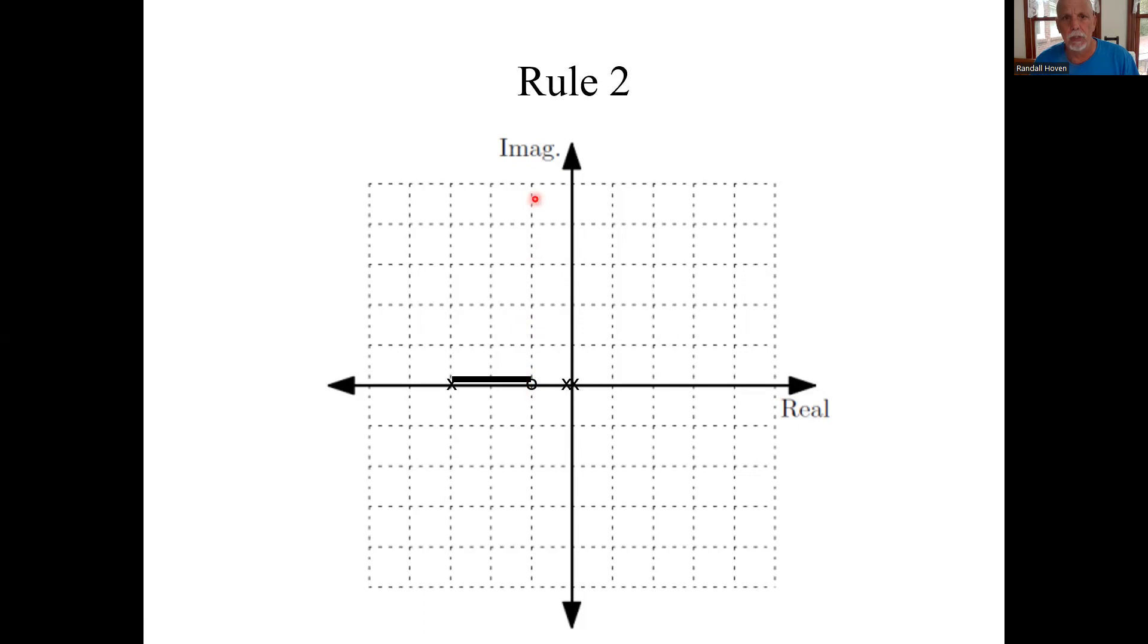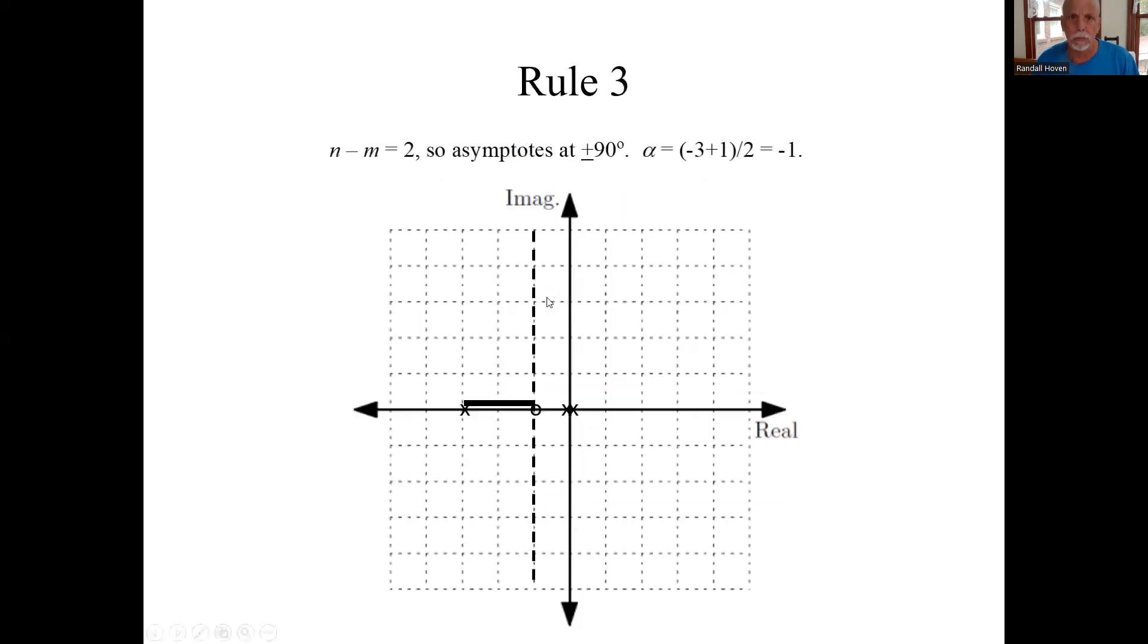The asymptote. It's going to be a vertical line. Where does it cross? Go back to the formula sheet. I'm not going to go through that calculation, but it crosses the real line at minus one. So there is the asymptote.